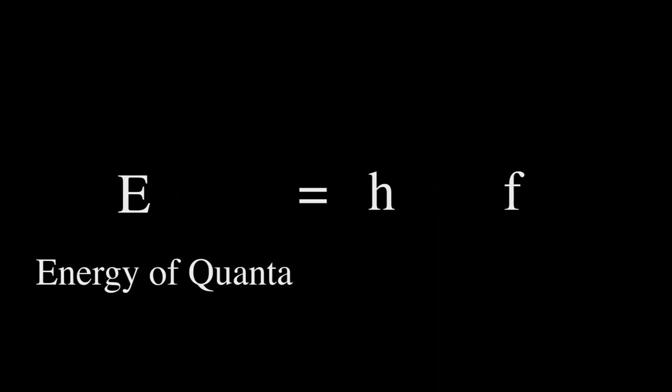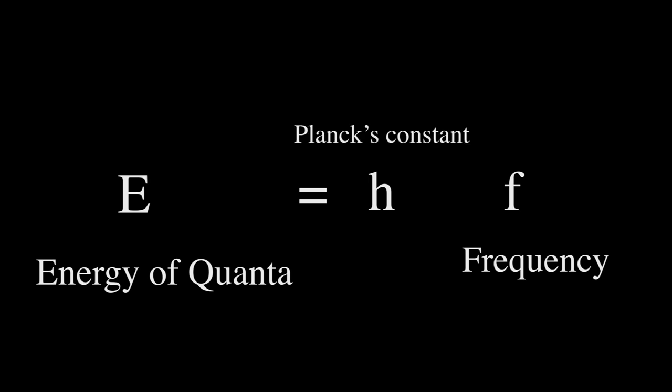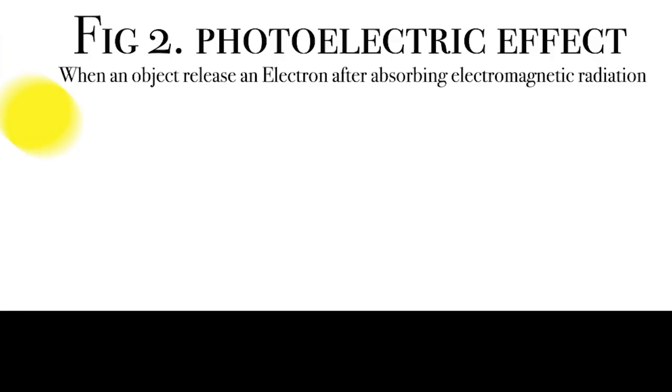Planck's description used some very unusual assumptions for its time — that electromagnetic radiation came not in continuous waves, but instead came in discrete energy packets he called quanta. Albert Einstein showed that Planck's assumption could be used to explain the photoelectric effect.